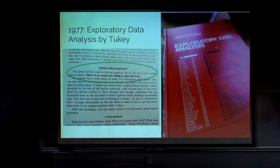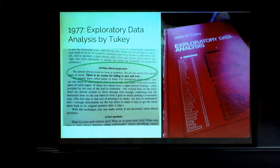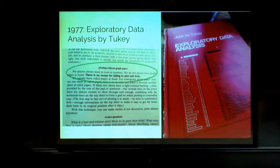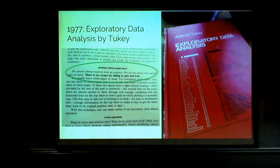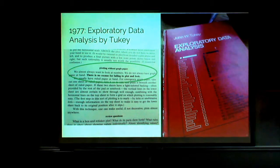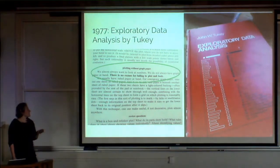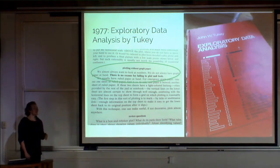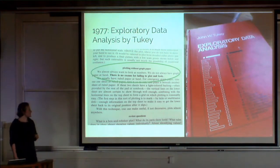For a little bit of historical perspective, this is a 1977 early exploratory data viz book by Tukey. He writes that there is no excuse for failing to plot and look. There's even a section on how to plot without graph paper — he says even if you don't have graph paper, there is no excuse for failing to plot and look. There's also a huge section on where to buy the best tracing paper. Our tools have changed, but the principle hasn't.